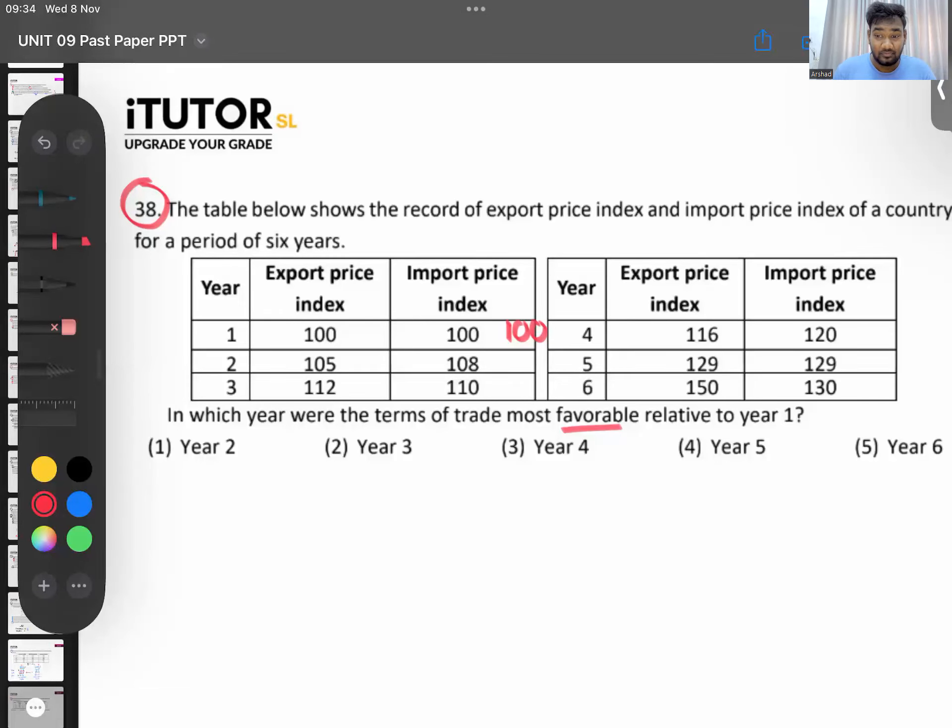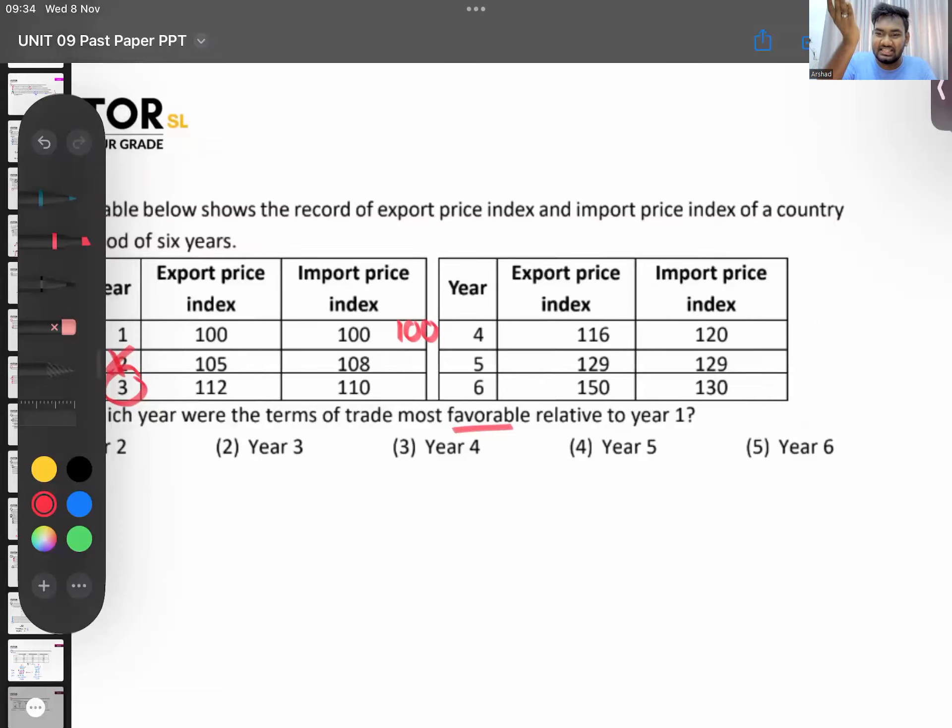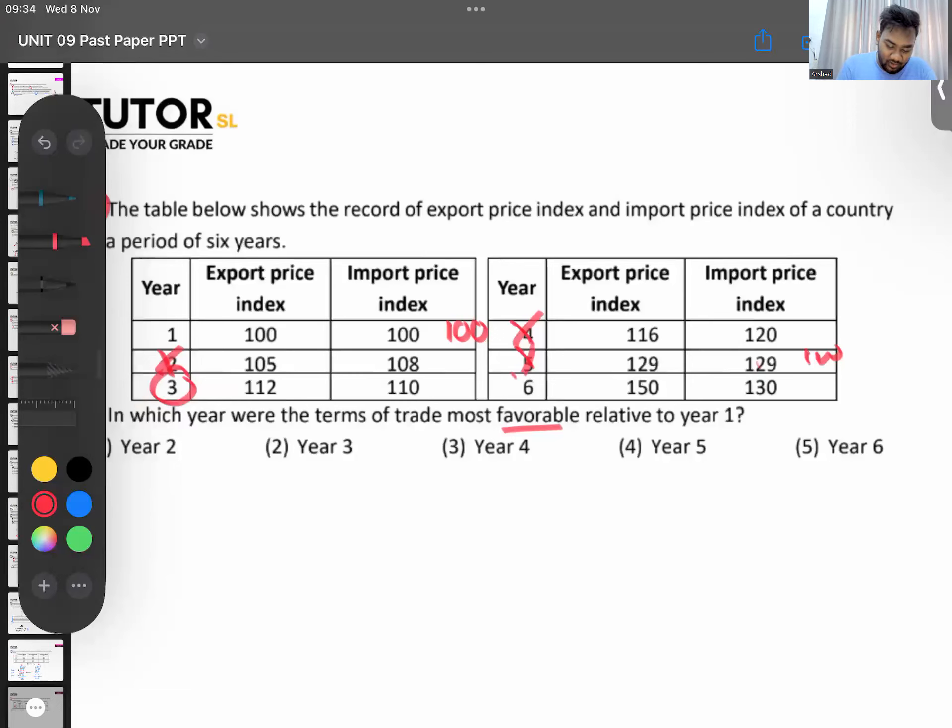Year two, will the terms of trade increase? Export price index 105, import price 108. Denominator is higher so your answer will be less than 100. Don't even calculate for that. Third one: 112, 110 - it can be more, so can be your answer. Fourth one: 116, 120. If the import price index is higher than the export price index, the number will be less than 100. Don't calculate. 129, 129 - export pricing will be equal to 100, no change. Don't have to calculate. 150, 130 - do you think? Yeah. So now use common sense. Third and sixth only, terms of trade would have improved. Which year would have improved the most? 112 and 110, or 150 and 130? Think of the difference - common sense, you don't calculate. Year six. See, that is where, for homework, you calculate and see how much is the terms of trade. So the answer will be year six.